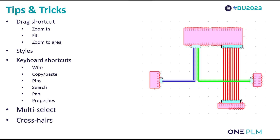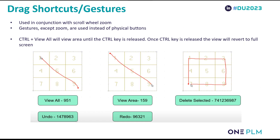Moving on to some tips and tricks — Paul and I wanted to show some things we found useful when getting to grips with Solid Edge Wire and Harness Design. I'll take you through some shortcuts, how to edit attributes in a schematic, and how to filter using multi-select mode. Solid Edge Wire and Harness Design doesn't have buttons for certain actions like zoom and fit; instead it relies on gestures. The two we found most useful are the View All and View Area functions. There are also others like undo, redo, and delete selected, which have traditional Windows shortcut keys. One other function we found really useful: if you press and hold the Control key and use zoom area, when you release Control the viewer snaps back to its original position.